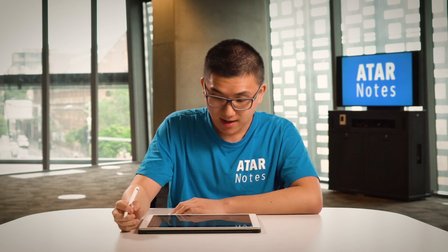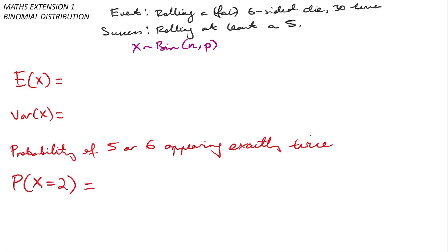In this example, I'm going to be rolling a usual six-sided die 30 times, so n equals 30. I define my success outcome as rolling at least a five, which can happen in two ways — rolling a five or a six — so the probability is 1/3. What I want to model is the number of successes, and once I have n and p, I can do all of that.